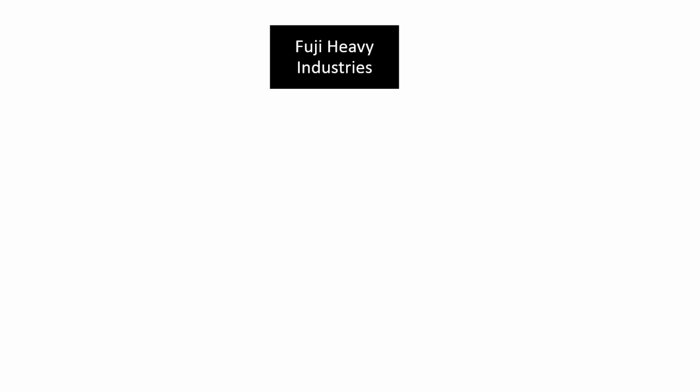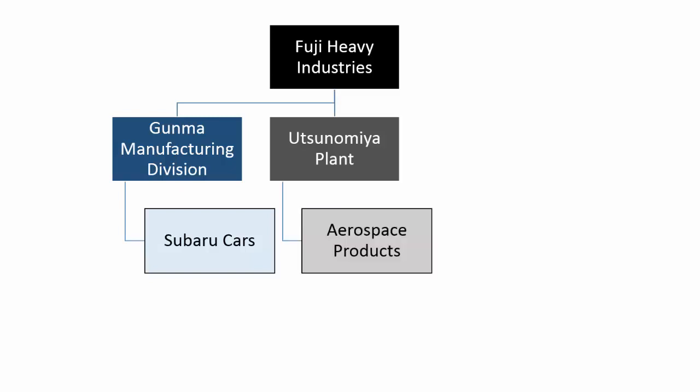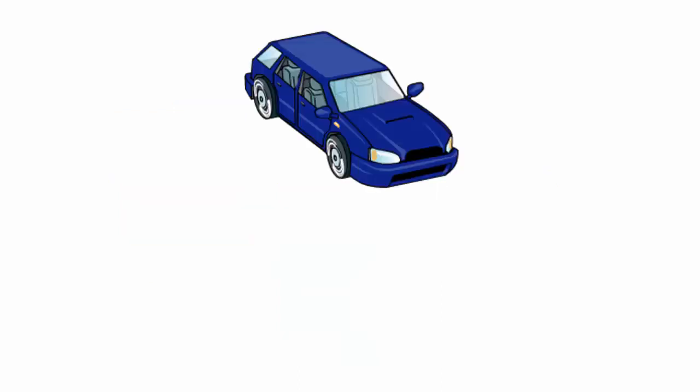For example, here's the organization for Fuji Heavy Industries. The Guma Manufacturing Division makes Subaru cars, Utsunomiya Plant makes aerospace products and eco technologies, and Kitamoto Plant makes Robin engines. Typically, I use SmartArt with other objects — I have some clip art here and I'm going to put my SmartArt object underneath.